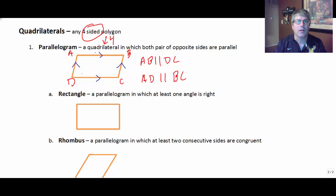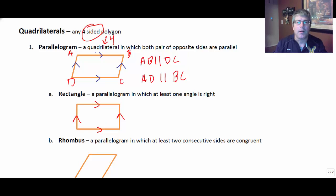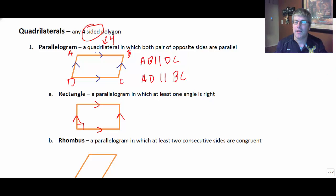A rectangle is a type of parallelogram — it falls under the parallelogram family. It's a parallelogram with at least one right angle, and that's all we need to define a rectangle right now. A parallelogram in which at least one angle is right is a rectangle. I know you know that all the angles are right, but we don't have to worry about that right now — we're going to get to that in the next video.